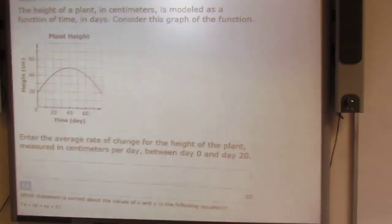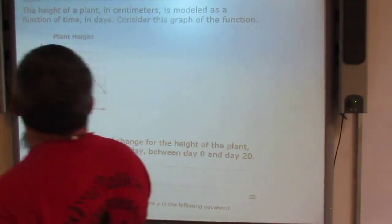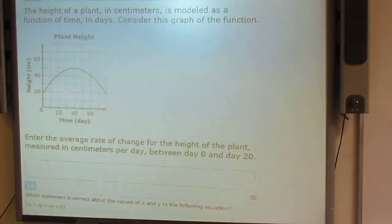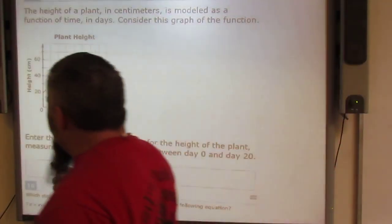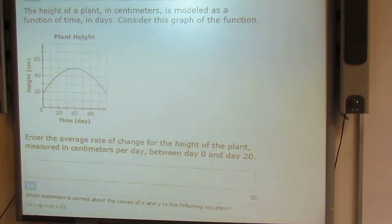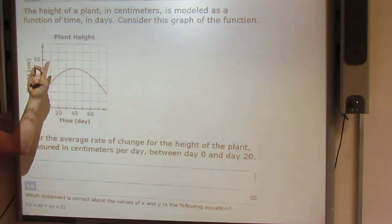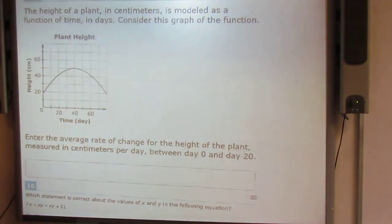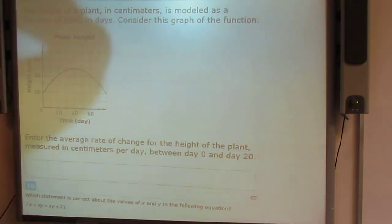All right, problem number 15. The height of a plant in centimeters is modeled as a function of time in days. Consider the graph of the function. You know, as funny as the plant, this must be a sunflower seed plant because it started up tall, then got taller, and then got smaller again.